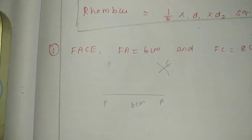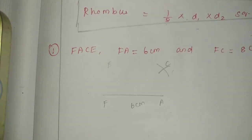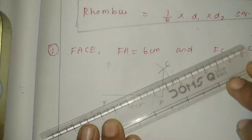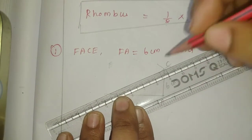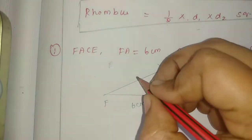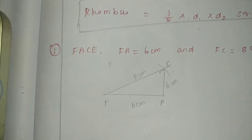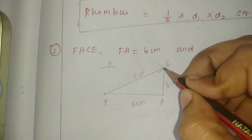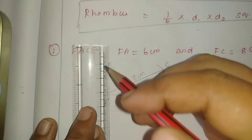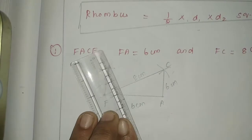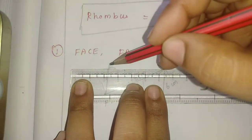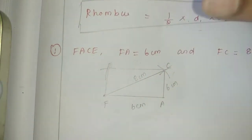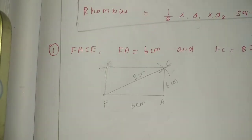Now, how do we join? The diagonal FC is 8 cm. All sides are 6 cm. Now we join the points. If you do it rough, we know the formula. Looking at the diagram, you have to show the shape clearly.